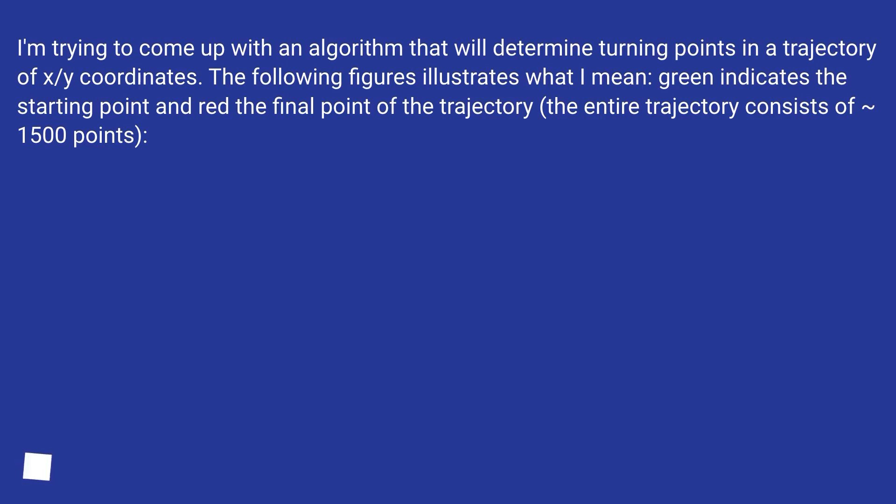I'm trying to come up with an algorithm that will determine turning points in a trajectory of x-y coordinates. The following figures illustrate what I mean. Green indicates the starting point and red the final point of the trajectory. The entire trajectory consists of 1,500 points.